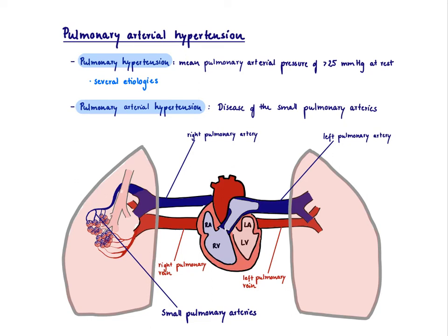In this video, I want to talk about pulmonary arterial hypertension. Let's start by defining what pulmonary hypertension is. Pulmonary hypertension refers to an increased pressure in the pulmonary arteries. If you have increased pressure in the pulmonary arteries — and remember, the pulmonary system is a low-pressure system — there can be many different reasons. The most likely reason is some sort of left heart problem, but there can be many more reasons why somebody develops pulmonary hypertension.